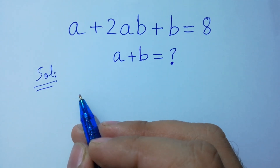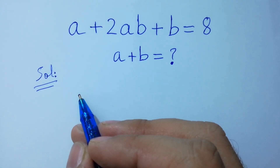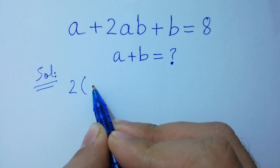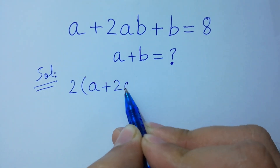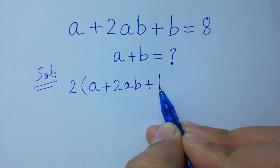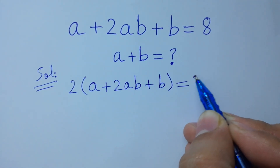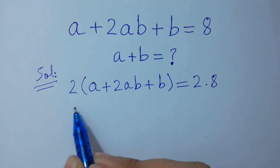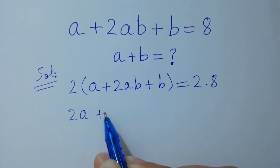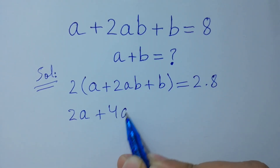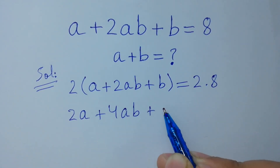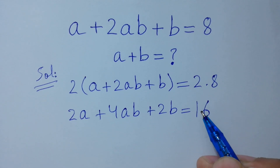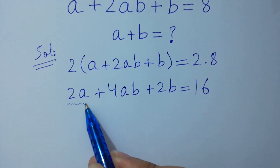To solve this, first multiply by 2 on both sides: 2(√a + 2√(ab) + √b) = 2 times 8. So 2√a plus 4√(ab) plus 2√b is equal to 16.